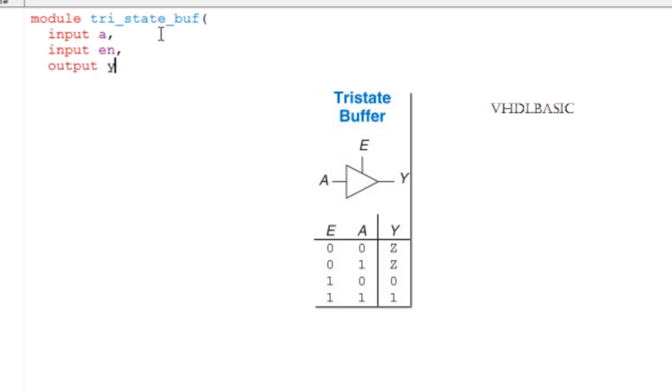Here we are going to see how the conditional statement can be implemented using the assign statement, that is conditional statement using data flow modeling. So Y equals enable, and if enable is 1, the value of A will be assigned to Y, else IZ will be assigned to Y.